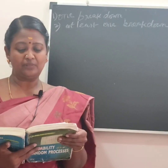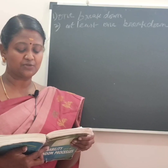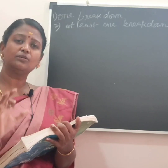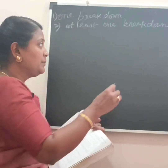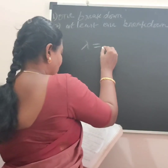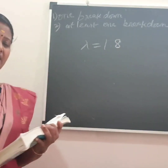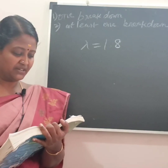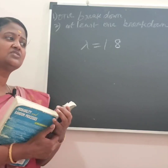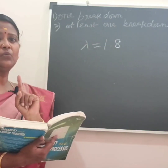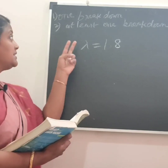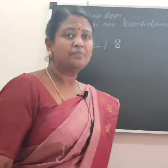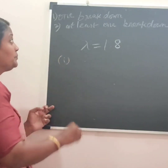The number of monthly breakdowns of a computer is a random variable having a Poisson distribution with mean equal to 1.8. If you have Poisson problems, we will solve directly. Since Poisson is given, lambda is equal to mean, so lambda equals 1.8. Find the probability that this computer will function for a month with exactly one breakdown.